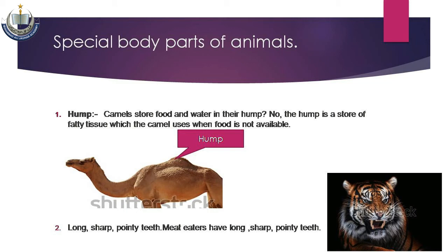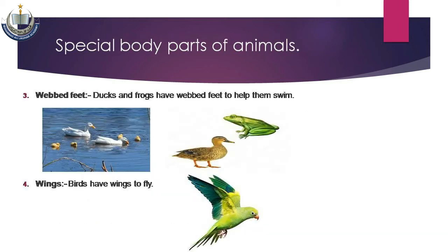Number two: Long sharp pointy teeth — کچھ animals کے لمبے تیز نوکدار دانت ہوتے ہیں تاکہ وہ گوشت وغیرہ کھا سکیں، مثال کے طور پر lion۔ جیسا کہ آپ slide میں دیکھ سکتے ہیں۔